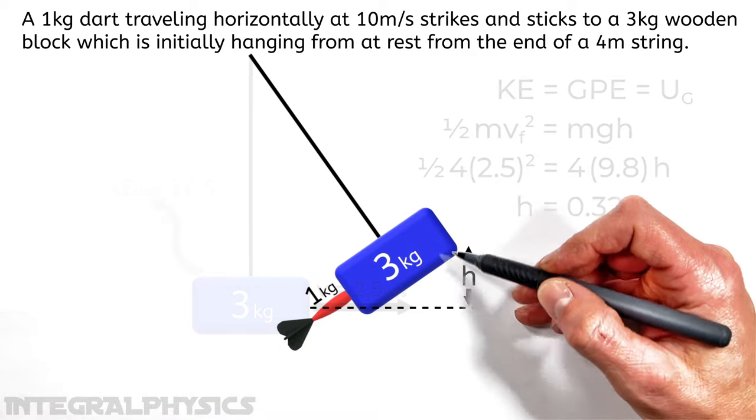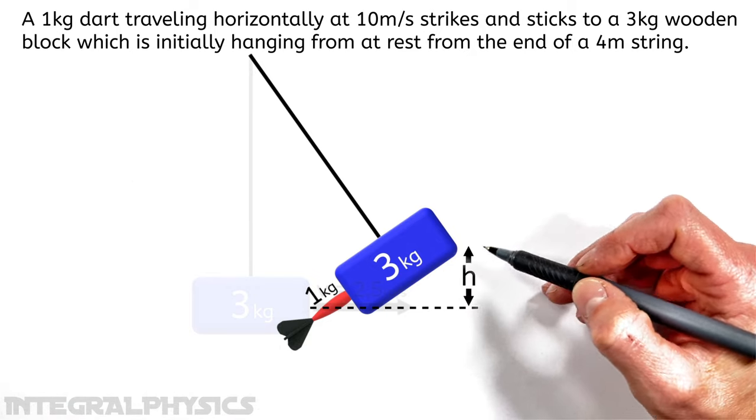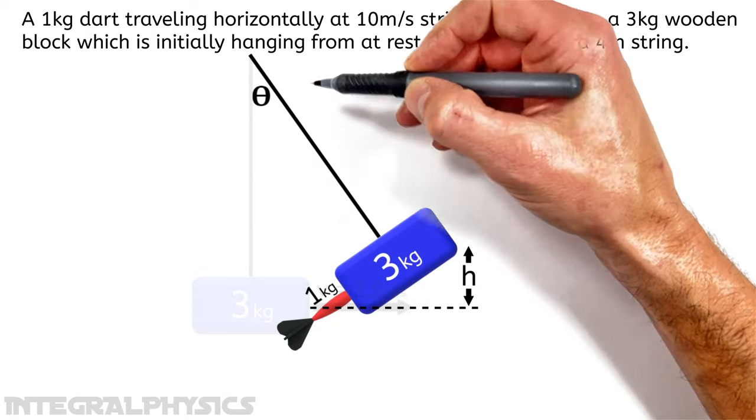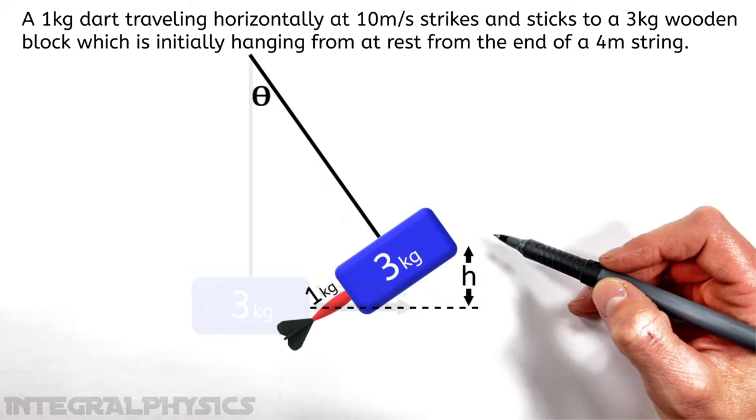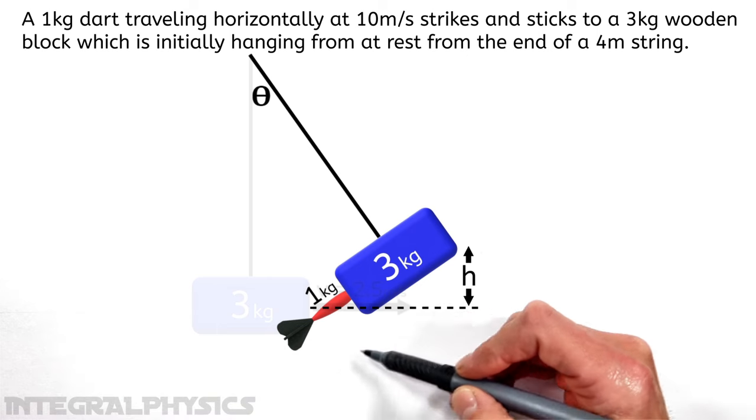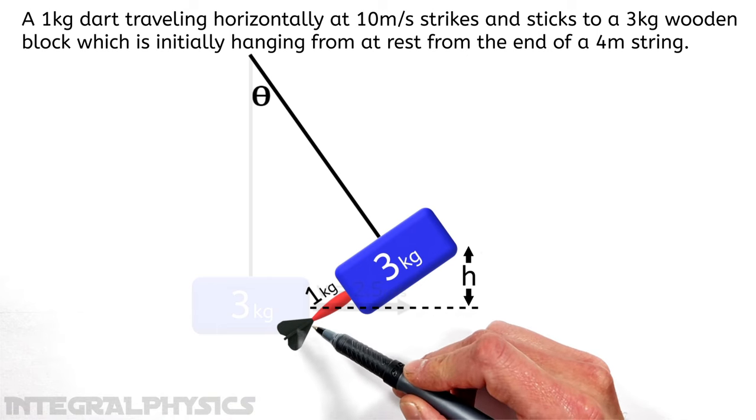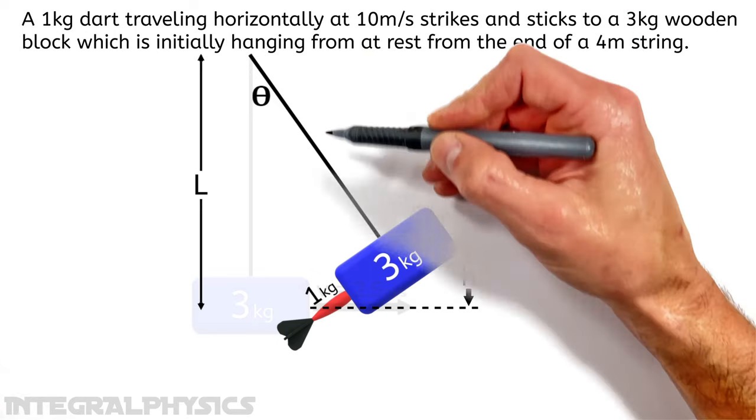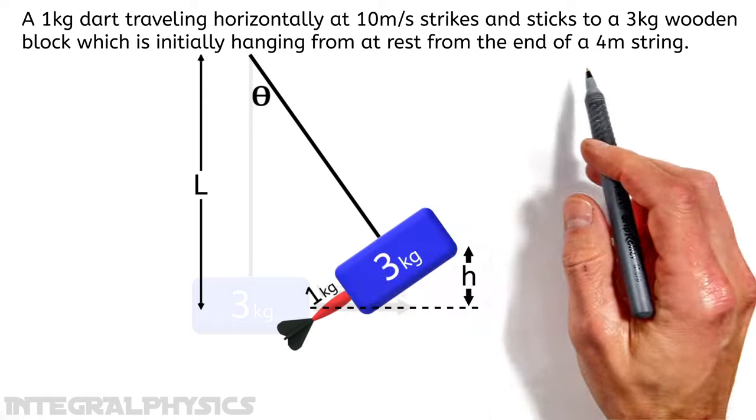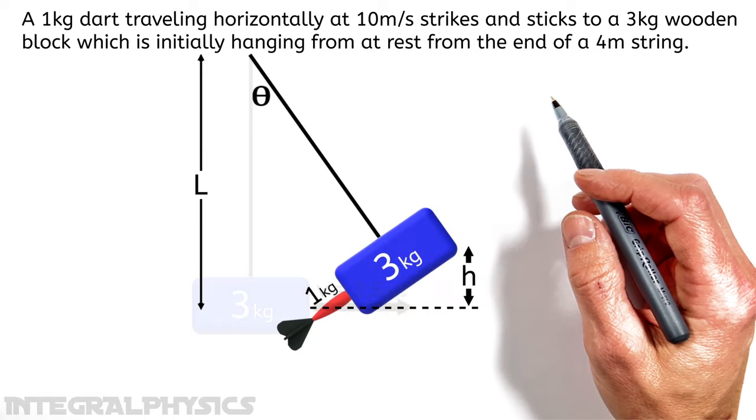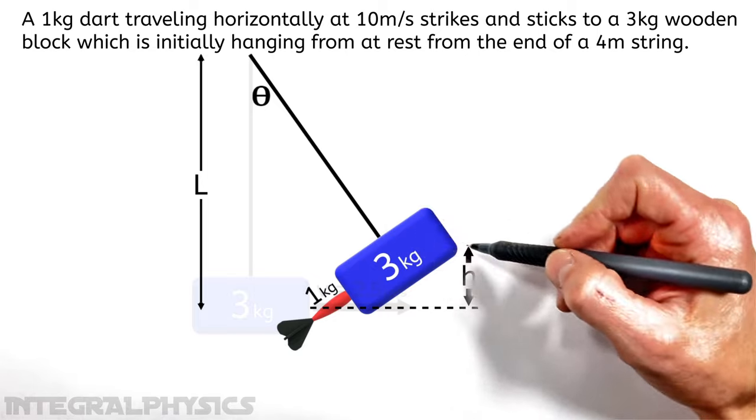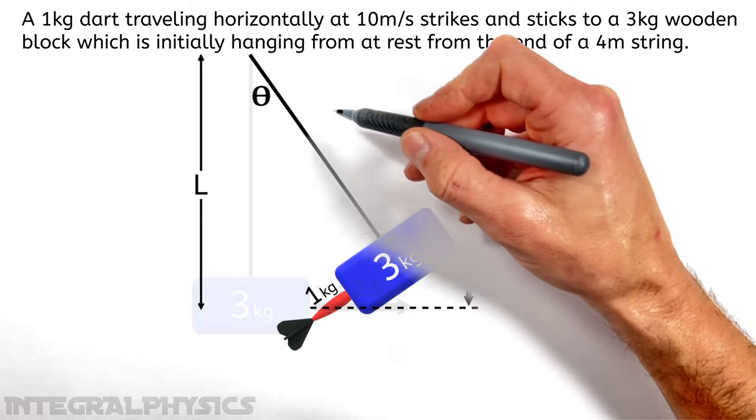So now knowing this change in height of the dart and block, we can solve for the angle which the string is going to make relative to the vertical axis. Now this comes down to being nothing more than a geometry problem. You see, when the block is hanging down at its very lowest point in its swing here, the distance from the pivot point to the block is L, the length of the string, which in this case is 4 meters. And when the dart and block swing backwards, the length of the string doesn't change. This is still 4 meters here.